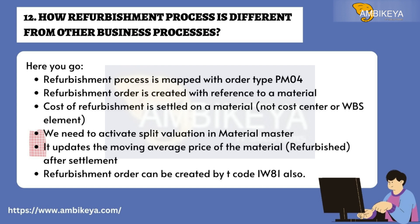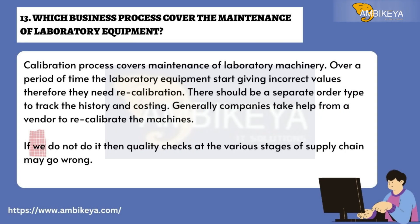Question number twelve: How is the refurbishment process different from other business processes? The refurbishment process is mapped with order type PM04. A refurbishment order is created with reference to a material, and cost of refurbishment is settled on a material — not a cost center or WBS element. We need to activate split valuation in material master. It updates the moving average price of the material after settlement. Refurbishment orders can also be created using T-code IW81.